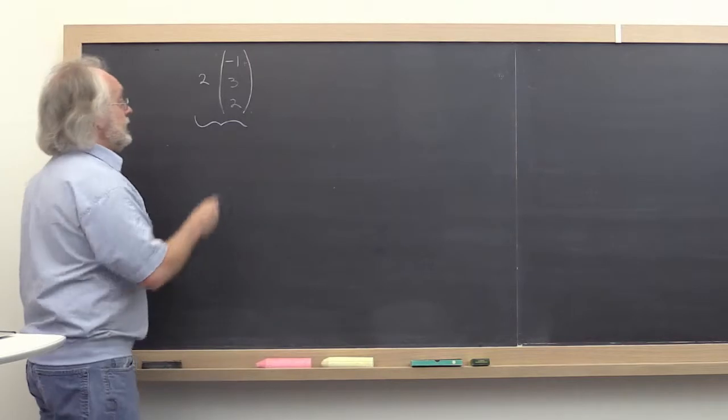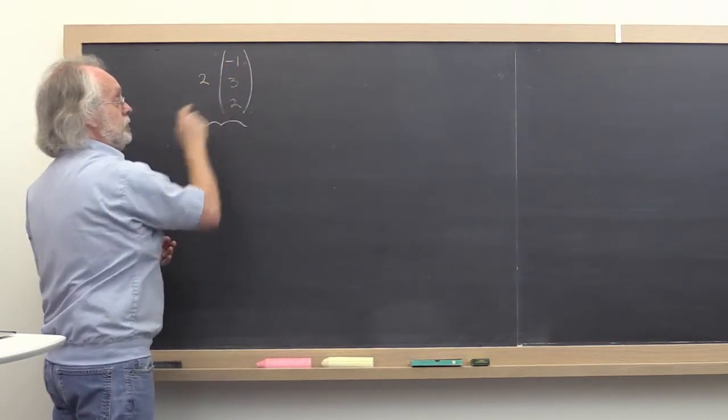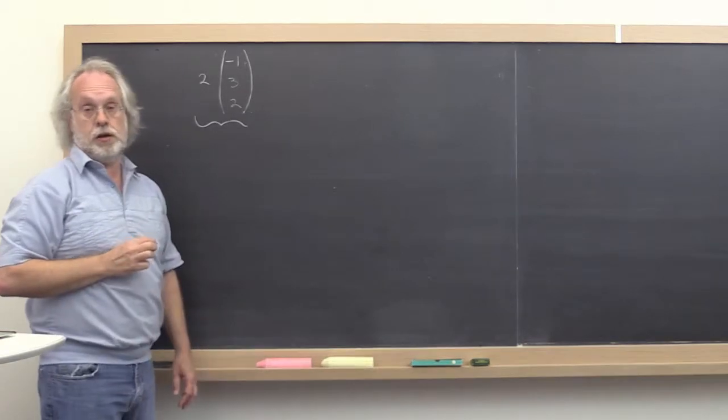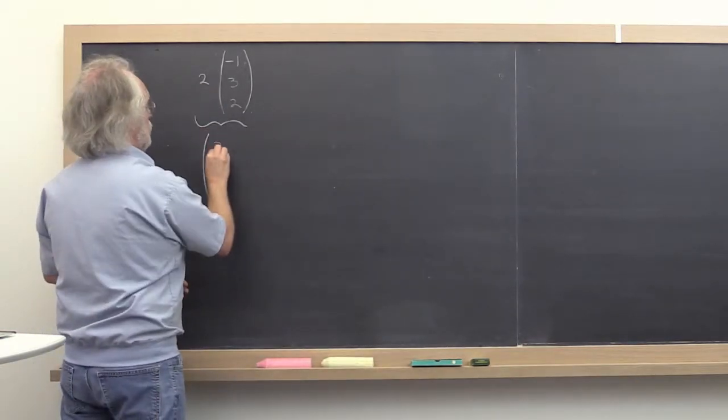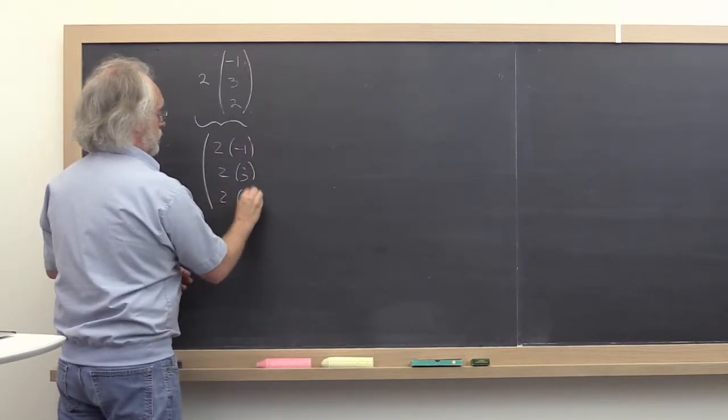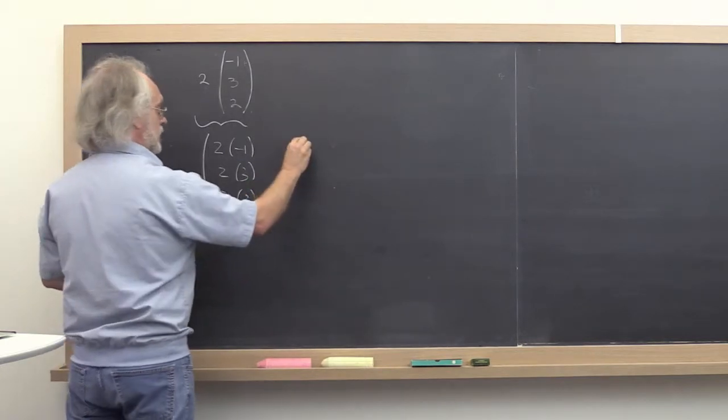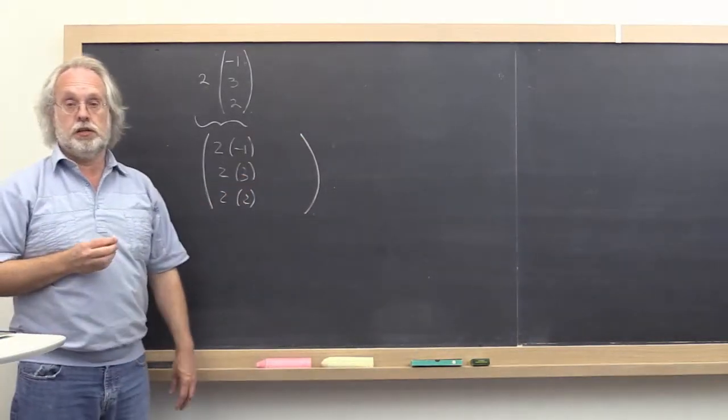And that translates to you just want to multiply each of the individual entries in the vector by that scalar. So this here is just 2 times minus 1, 2 times 3, 2 times 2. And what the actual answer here is, is not that important. And I'm going to leave myself a little bit of room.